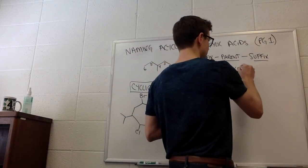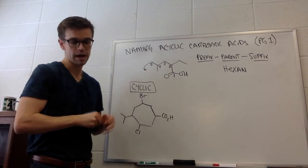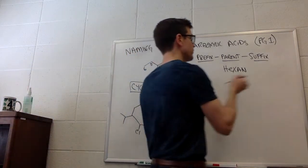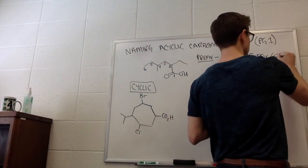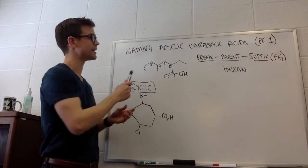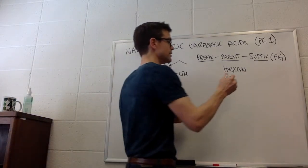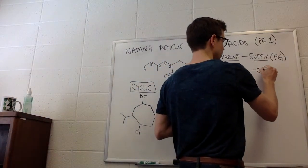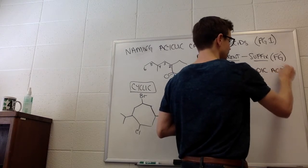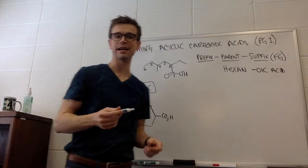So we're going to have hex-an as the parent name, and then the suffix is what tells us what functional groups are present. So which functional groups are present? This is a carboxylic acid. When acyclic carboxylic acids, the suffix is oic acid. So this would be hexanoic acid, hexanoic acid.